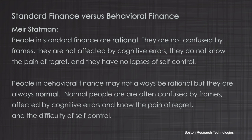Meyer Statman, from the first segment, defined the difference between standard finance and behavioral finance in a way that addresses cognitive bias. People in standard finance are rational — they are not confused by frames, not affected by cognitive errors, do not know the pain of regret, and have no lapses of self-control. People in behavioral finance, however, may not always be rational, but they are always normal. Normal people are often confused by frames, affected by cognitive bias, and know the pain of regret and the difficulty of self-control.